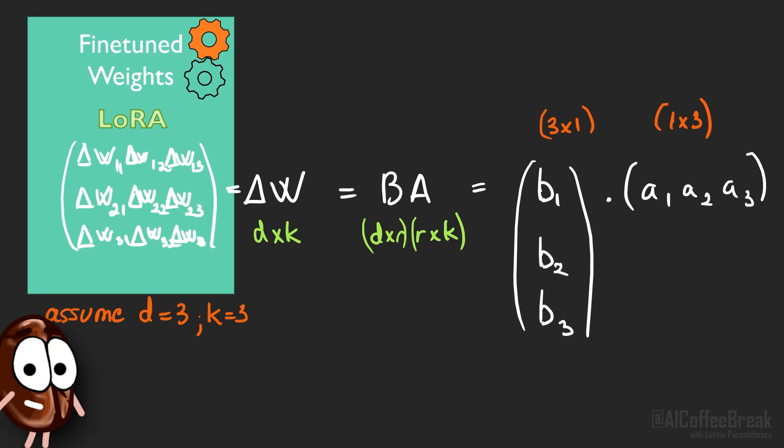We gain computational efficiency because A and B together contain less numbers than the original weight matrix, in this example we have 6 numbers instead of 9, thus there are less numbers we need to tune. And the bigger the original weight matrices, the higher the gains from doing this decomposition to a low rank R.